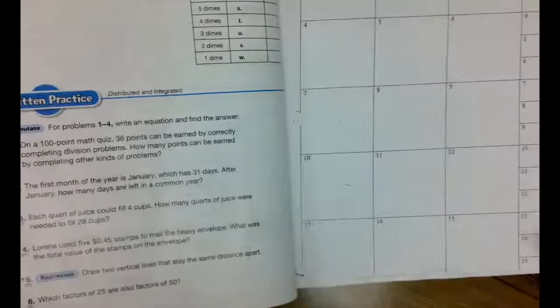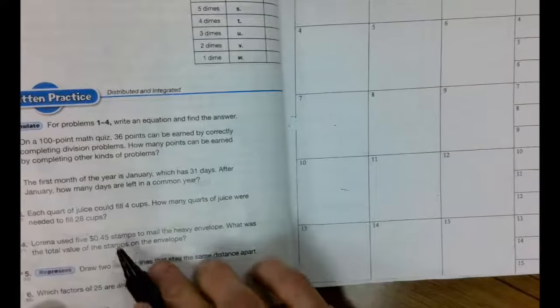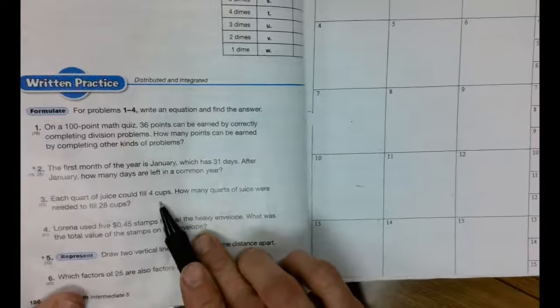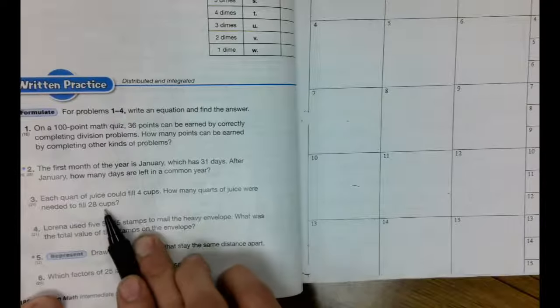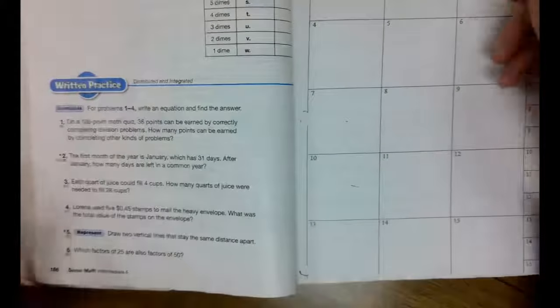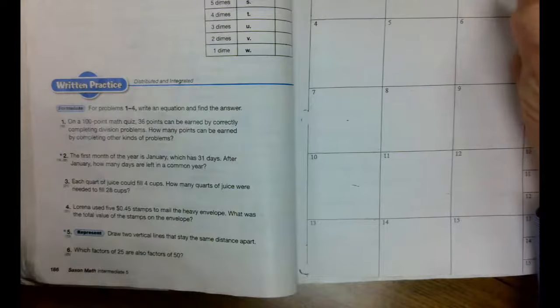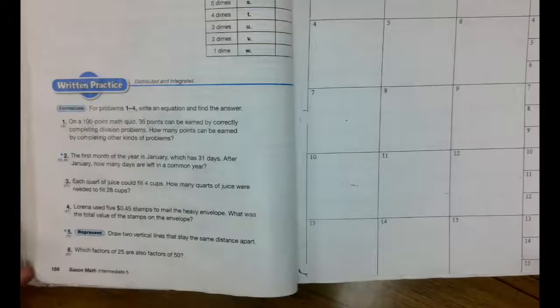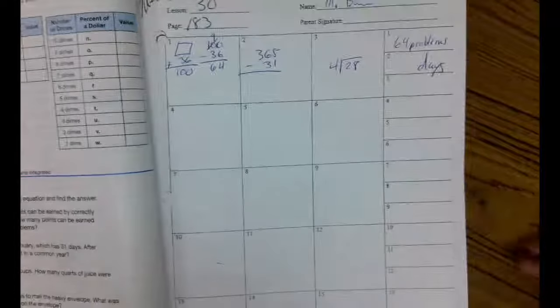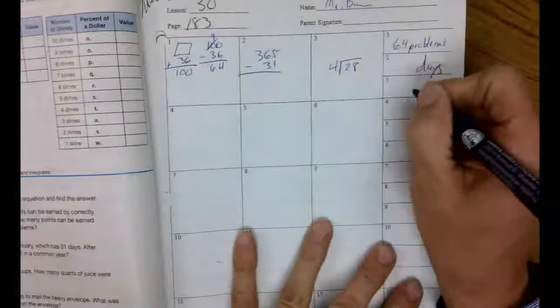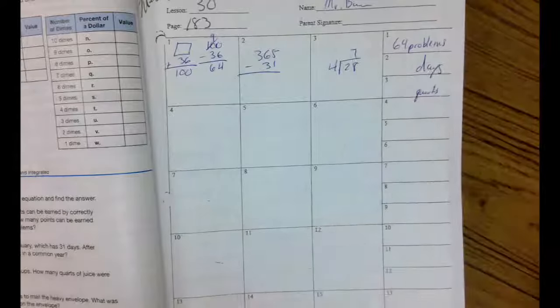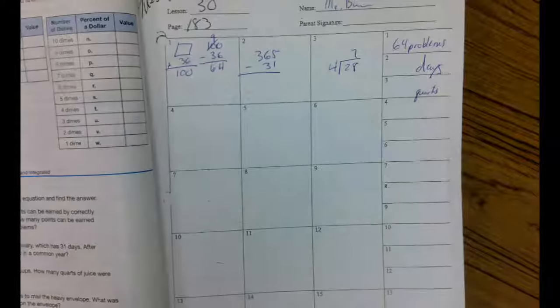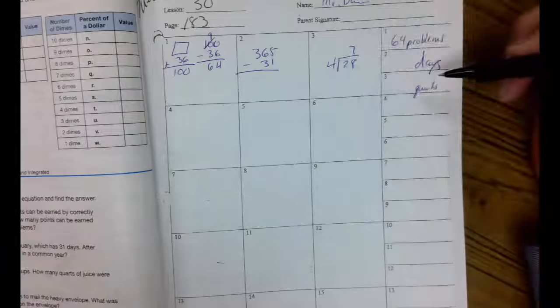Number three, each quart of juice could fill four cups. How many quarts of juice would be needed to fill 28 cups? So we've got to take 28 total cups and divide it by four cups per quart. 28 divided by four gives me what? And that would be quarts. Obviously the answer is seven. So you've got to figure it on your own and put them over here.